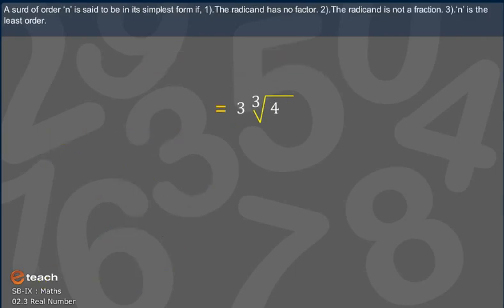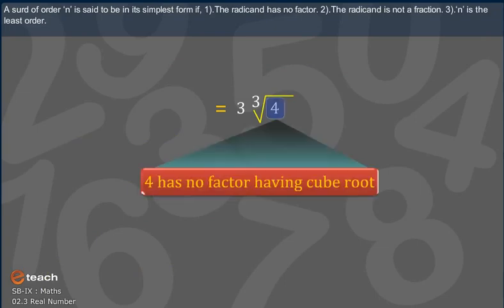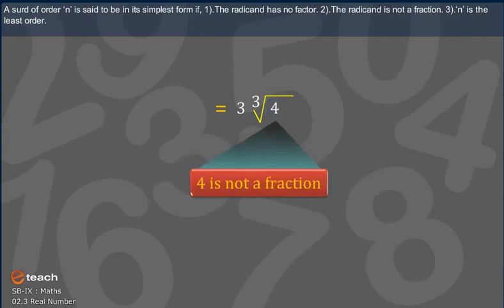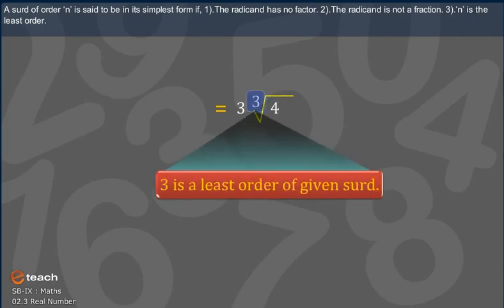A surd of order n is said to be in its simplest form if: 1. the radicand has no perfect nth power factor, 2. the radicand is not a fraction, and 3. n is the least possible order.